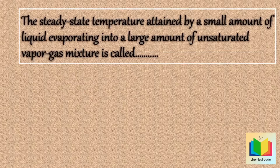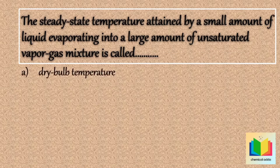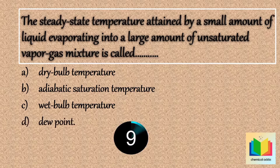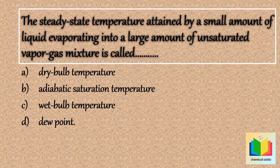Next question: the steady state temperature attained by a small amount of liquid evaporating into a large amount of unsaturated vapor gas mixture is called — option A: dry bulb temperature, option B: adiabatic saturation temperature, option C: wet bulb temperature, option D: dew point. The answer is option C: wet bulb temperature.